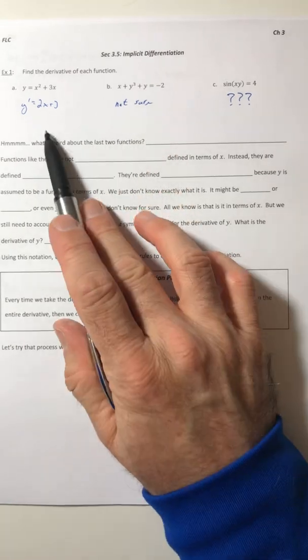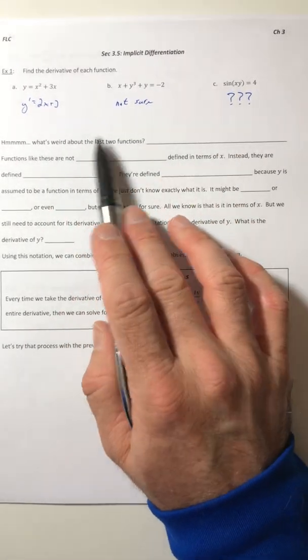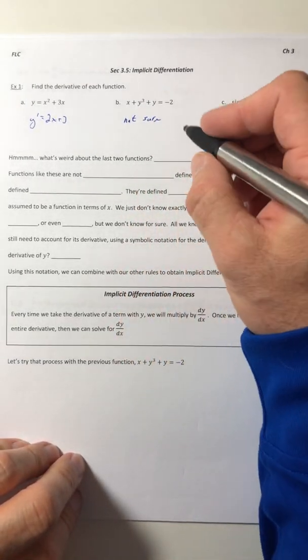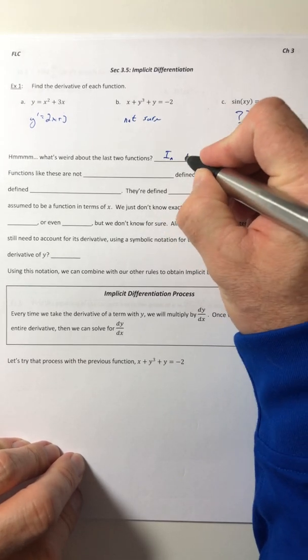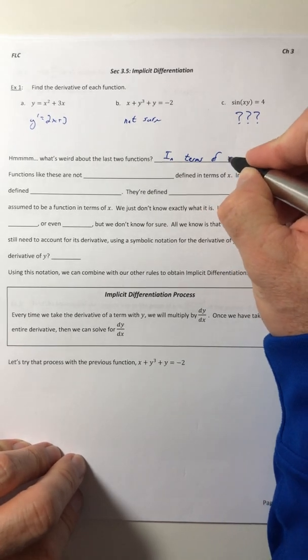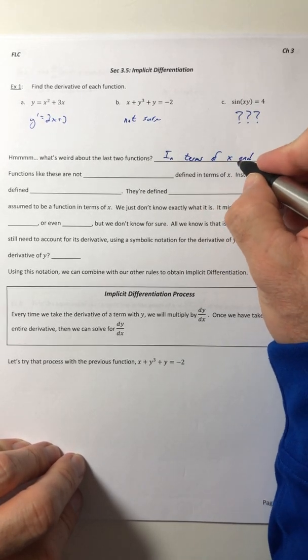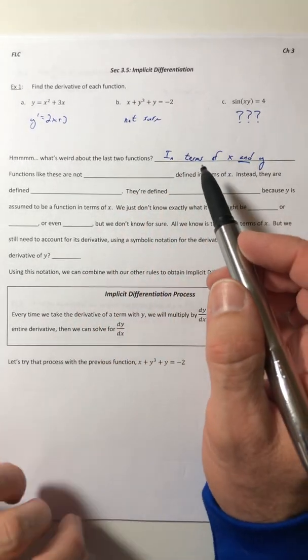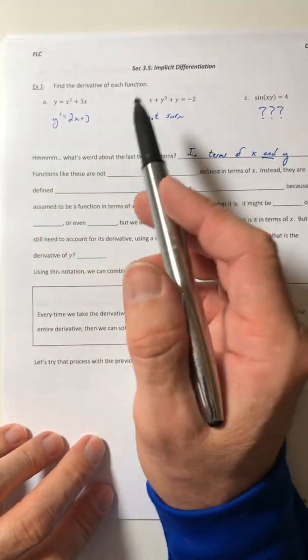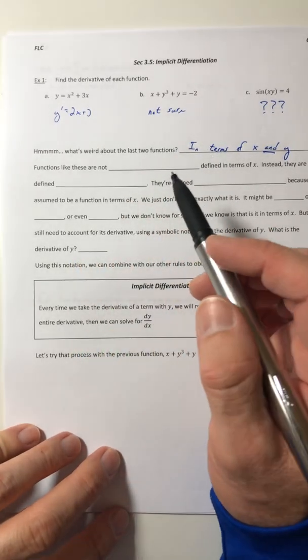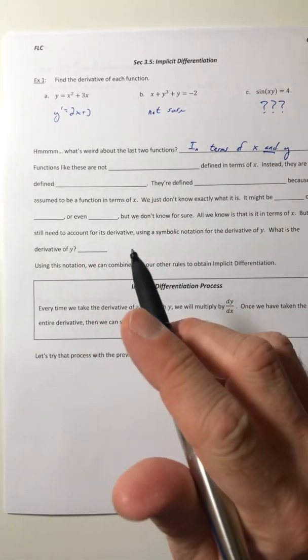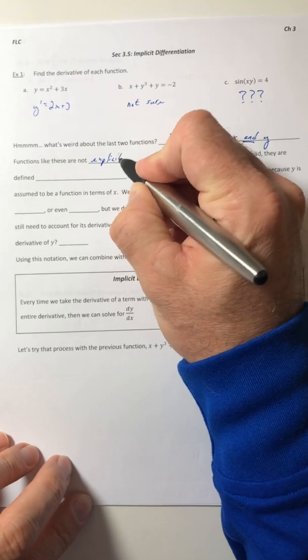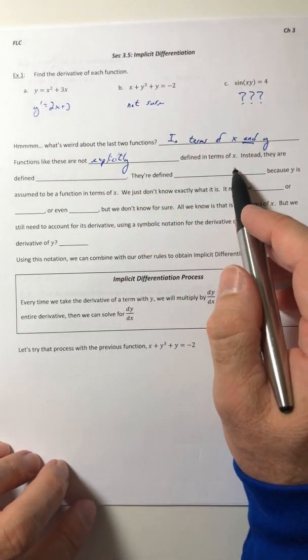So that first one I could do, but the second two, there's something weird about them. So what is it? Well, both of these functions, they are in terms of x and y. You have x and y running around on the same side. It's not like part A where you can get it so it's y equals, at least not very easily. It's in terms of both variables.